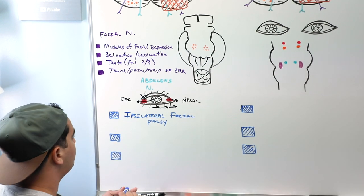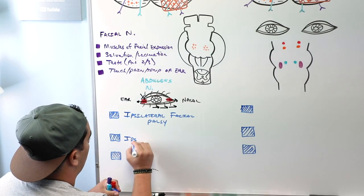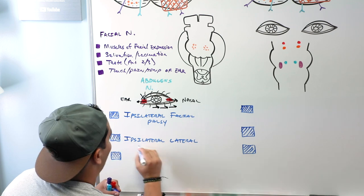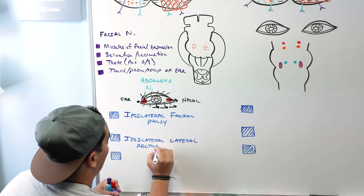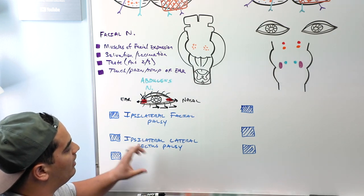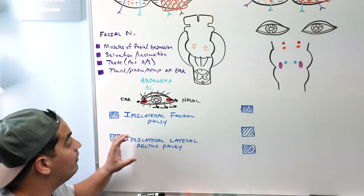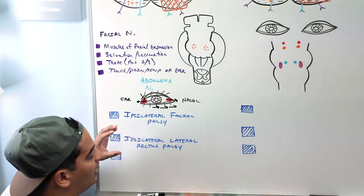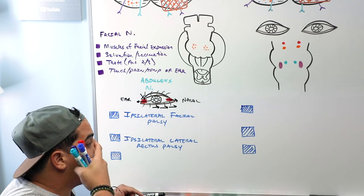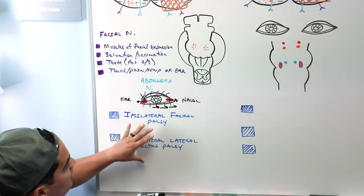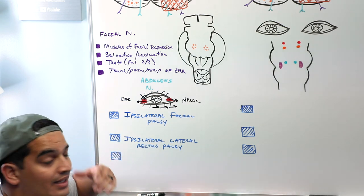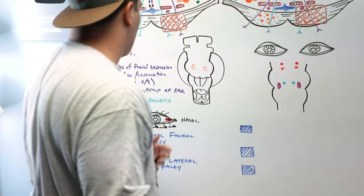With unopposed medial rectus action, the ipsilateral eye deviates inward. This is called ipsilateral lateral rectus palsy. So we now have ipsilateral facial palsy and ipsilateral lateral rectus palsy due to damage of the abducens fasciculus.